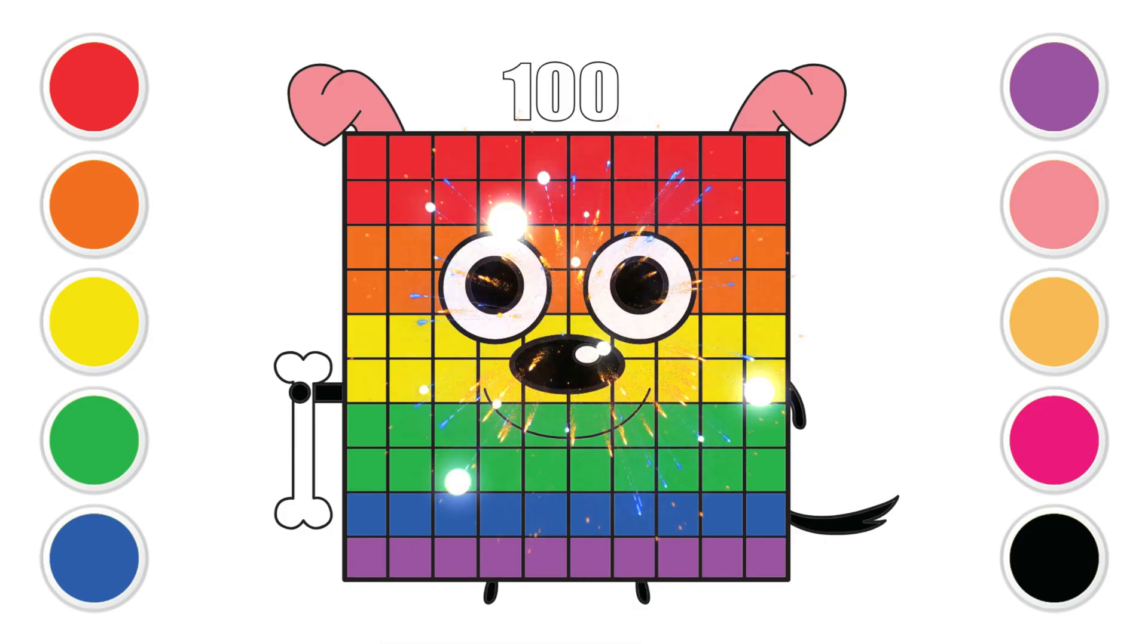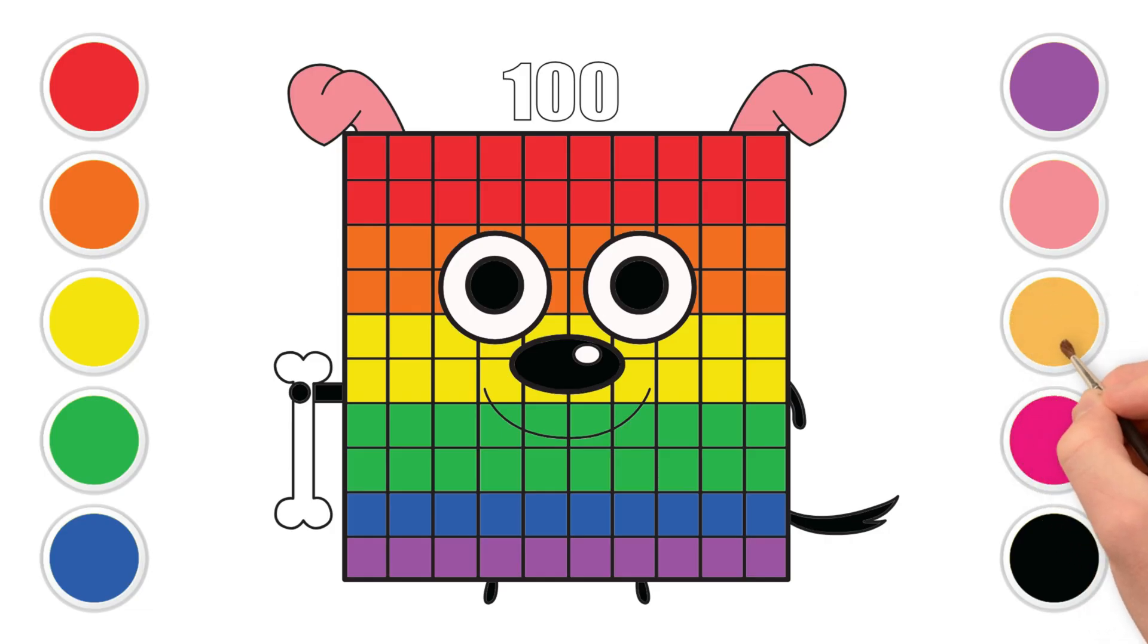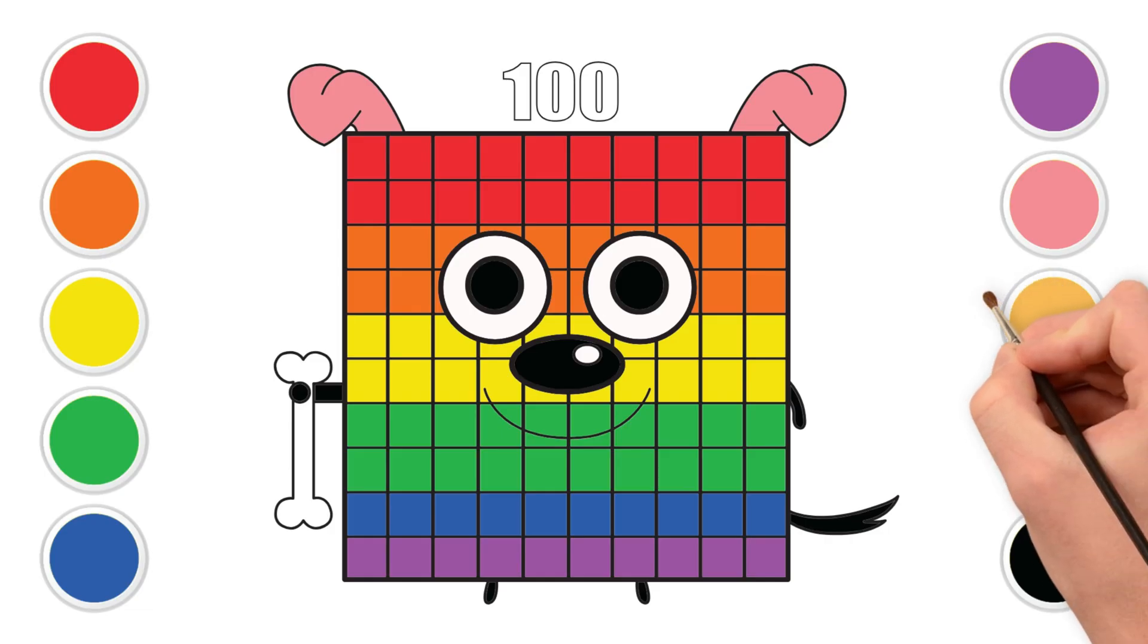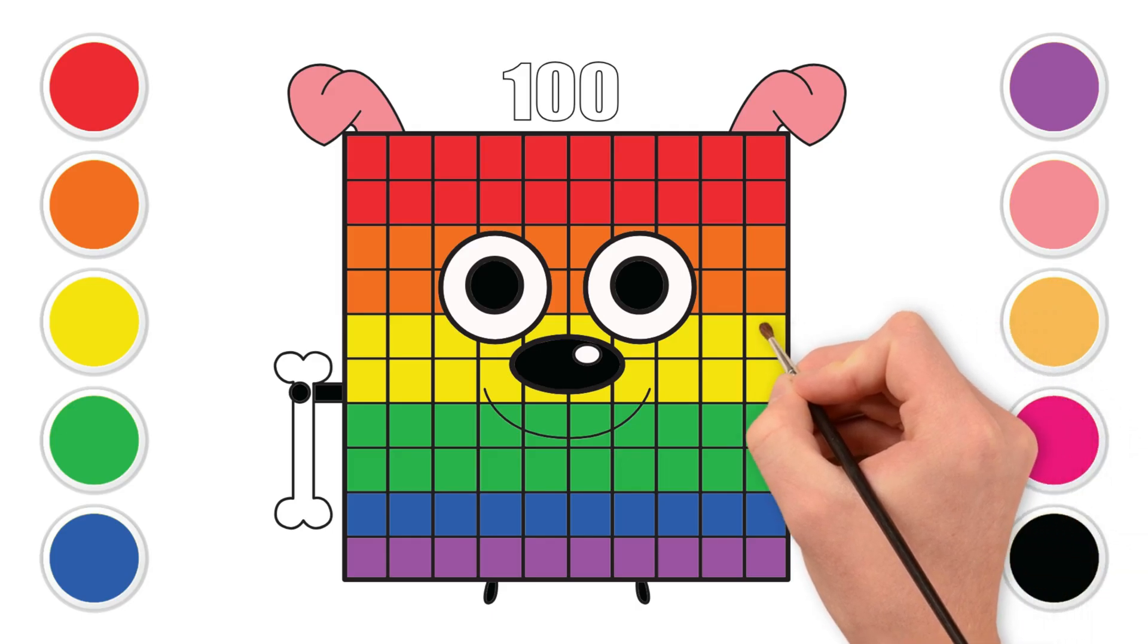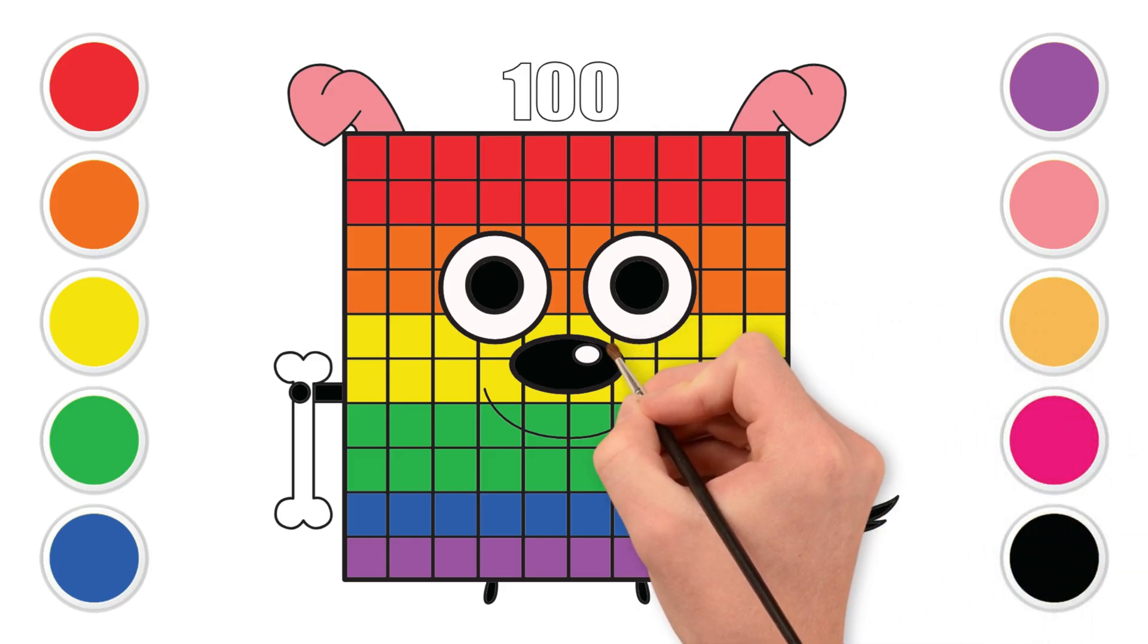Give yourself a big clap for ten claps for one hundred blocks. Color the bone with a cream color. And at the top, color the number one hundred with the same cream color.